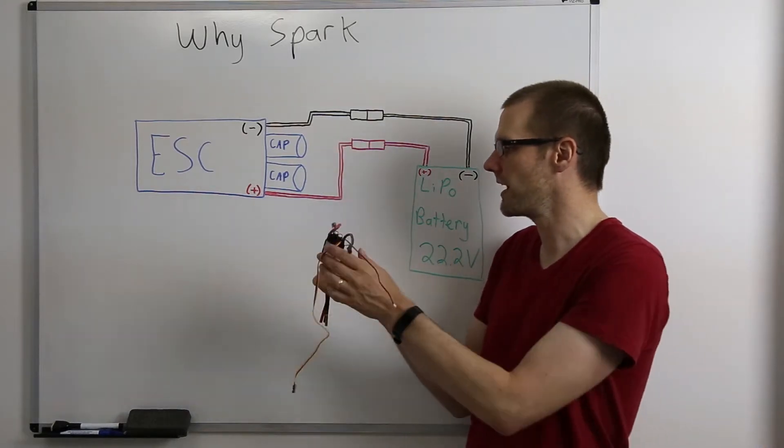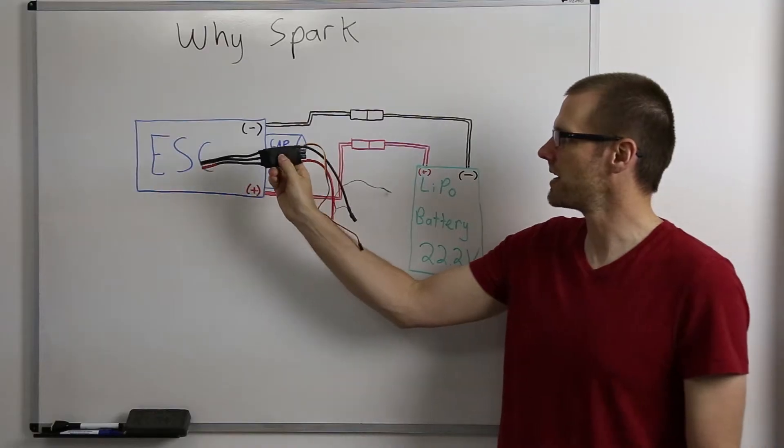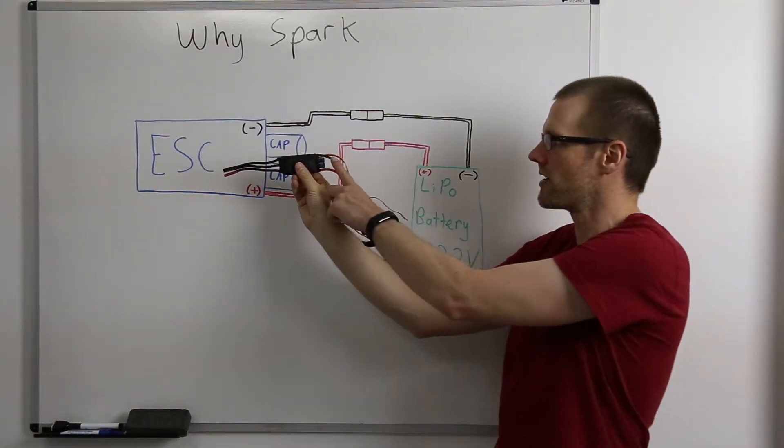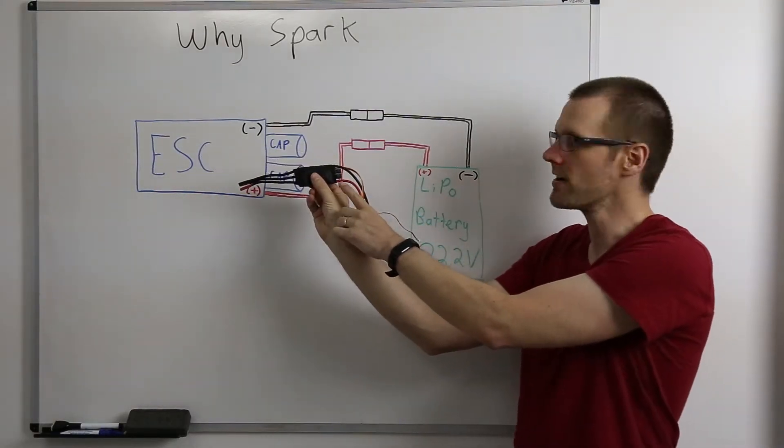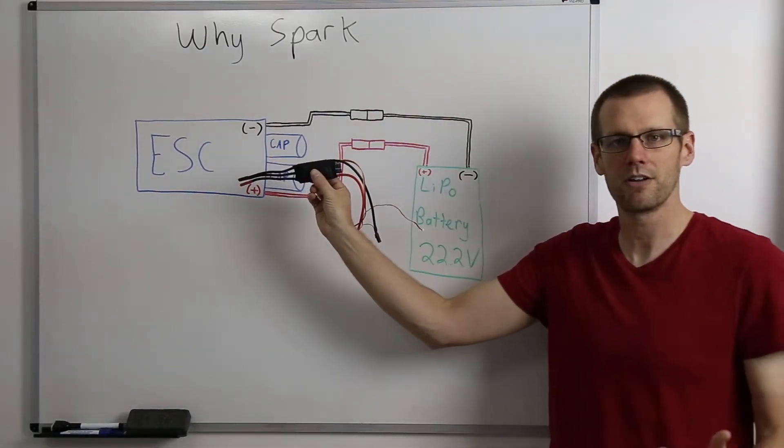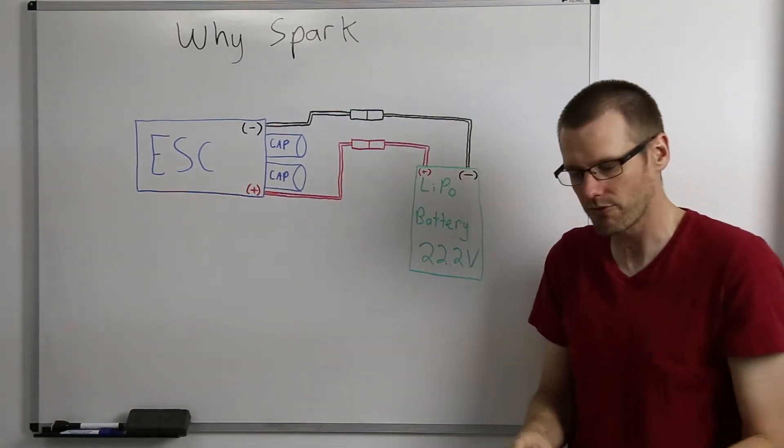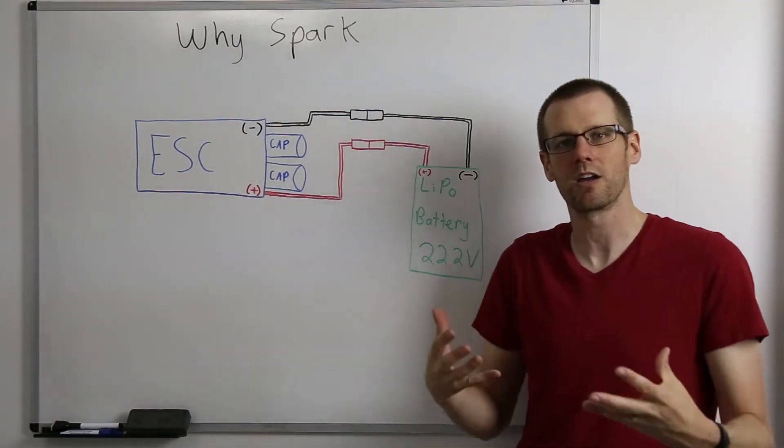I have an example here in my hand. I'm going to flip it up so we have the right orientation here with our negative lead on the top. We have a couple of capacitors that are right here in the center of our electronic speed control. These are the pieces that are important for what we're going to be talking about today.